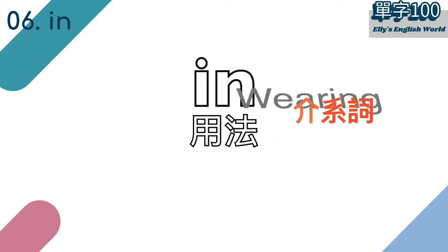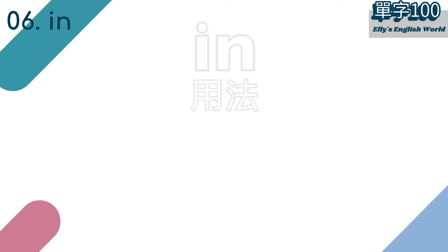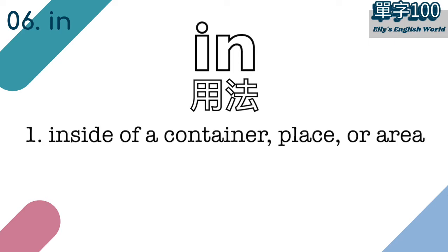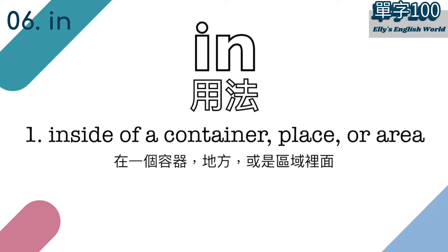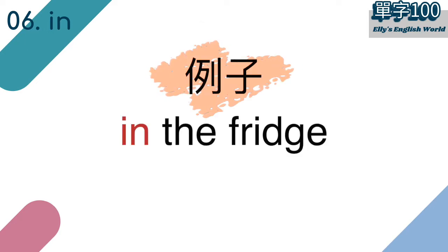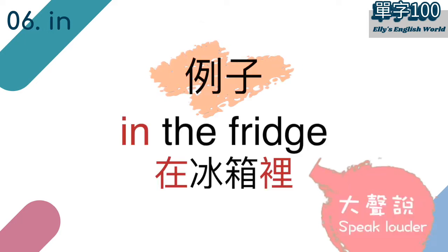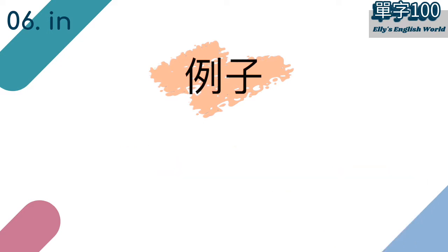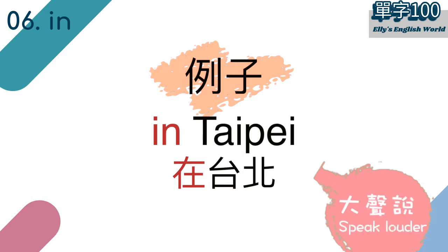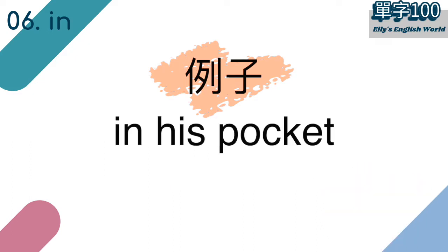我们这里先介绍其中两种用法。用法一：inside of a container, place or area，在一个容器、地方或是区域里面。例如："In the fridge"，"In Taipei"，"In his pocket"。